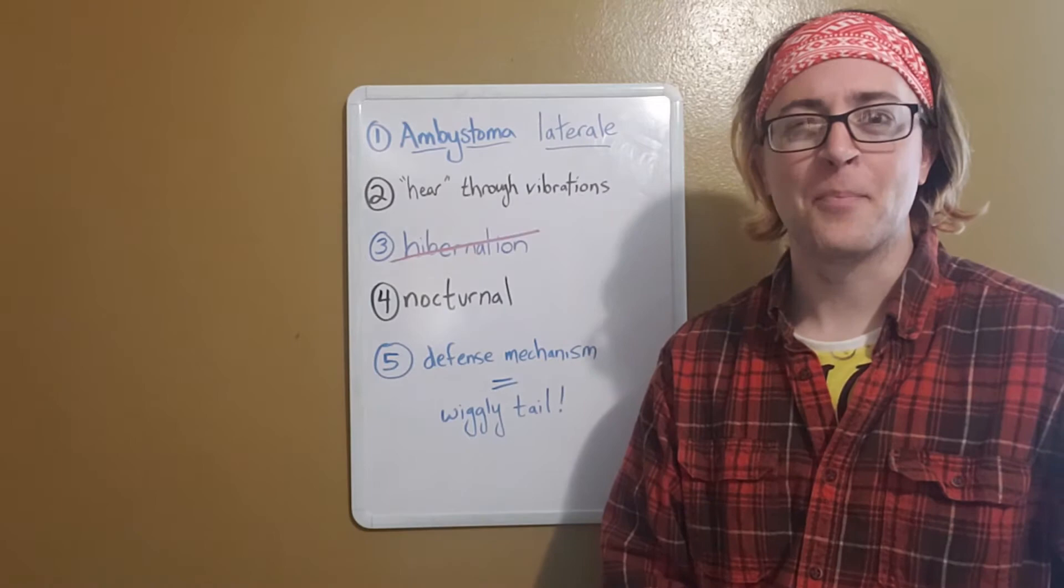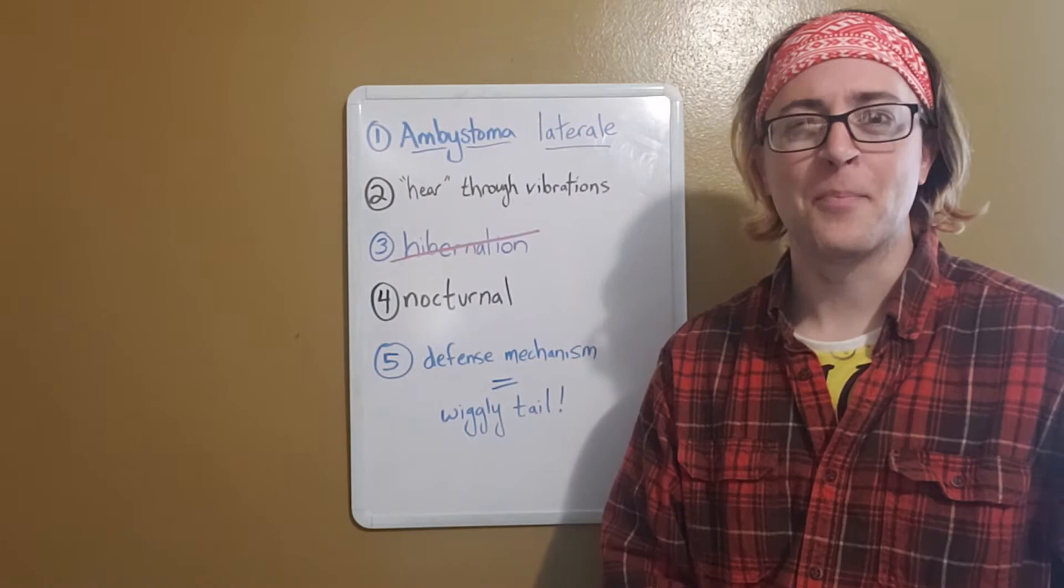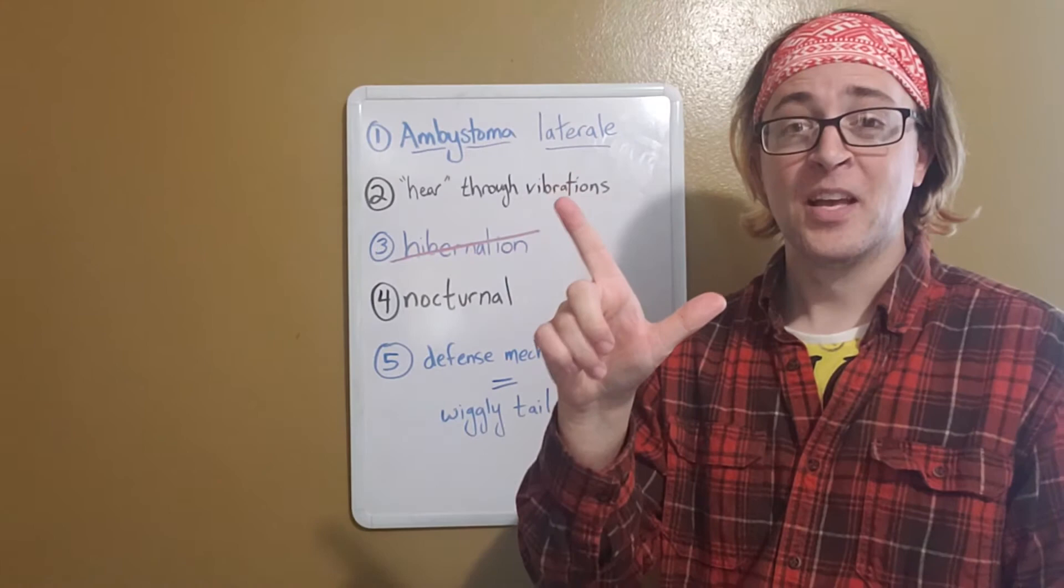So this genus of salamanders is named for their cup-shaped mouths. And then laterale, which means the sides, and that's specifically referring to the blue spots on the sides of the salamander's body.